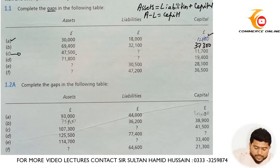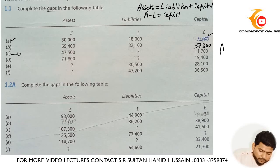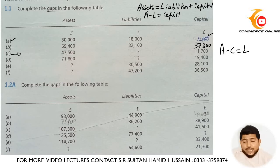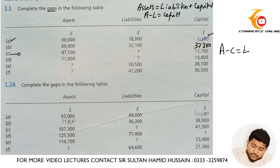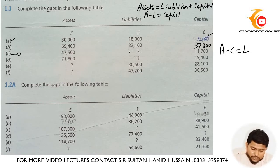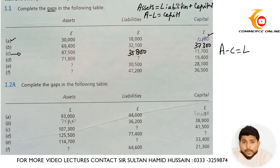In part C, assets are given as 47,500 and capital is given as 11,700. We need to subtract capital from assets to find out liabilities. So assets 47,500 minus capital 11,700 gives us 35,800.